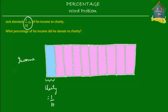Let's suppose his income was one thousand dollars — it doesn't really matter how much he made, we just suppose for now. If his income was one thousand dollars, then each of the ten equal parts would be equal to one hundred dollars, since one thousand divided by ten equals one hundred. So the amount he gave to charity would be one hundred dollars, and the amount he kept for himself would be nine hundred dollars.